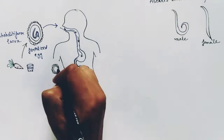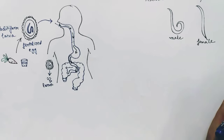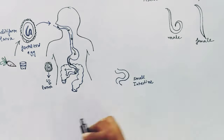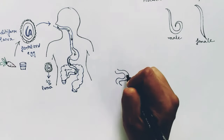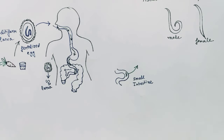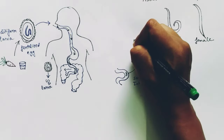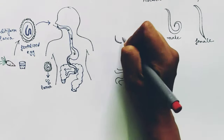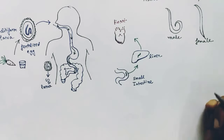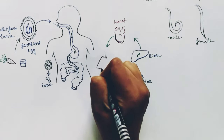When it reaches the small intestine, the rhabditiform larva comes out of the egg. The larva is now in the small intestine. From there, it invades the wall of the small intestine and enters the blood circulation. Through the portal vein, the larva reaches the liver. From the liver, through the hepatic veins, it reaches the heart. From the heart, through blood circulation, the larva travels to the lungs, where it undergoes its second and third molting.